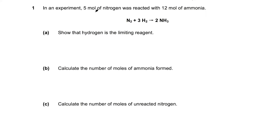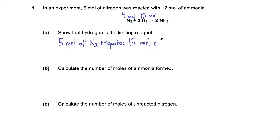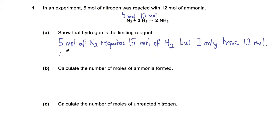In Example 1, we are given 5 moles of nitrogen and 12 moles of hydrogen to produce ammonia. To show that hydrogen is limiting, we compare the ratio: 5 moles of N₂ requires 15 moles of H₂ (by the 1:3 ratio), but I only have 12 moles. Since 5 moles would require 15 moles of H₂ but I only have 12, hydrogen is the limiting reactant.